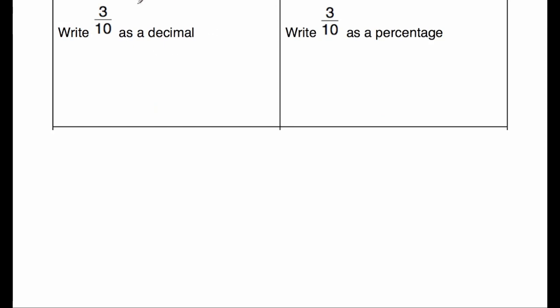Our next question — we've been asked to write 3 tenths as a decimal. So to write 3 tenths as a decimal, we could do this in a few different ways. First of all, we could do 3 divided by 10, which is 0.3. Another way which I like is to just write what we say — 3 tenths — and that's 0.3.